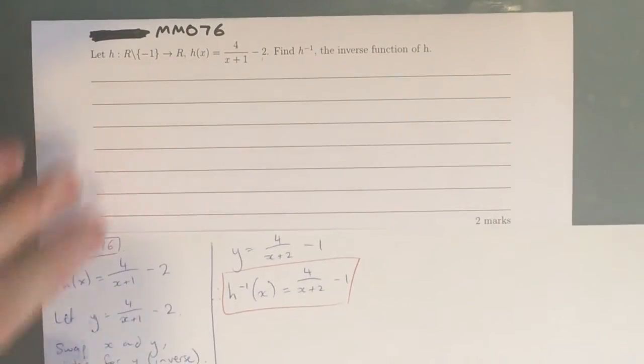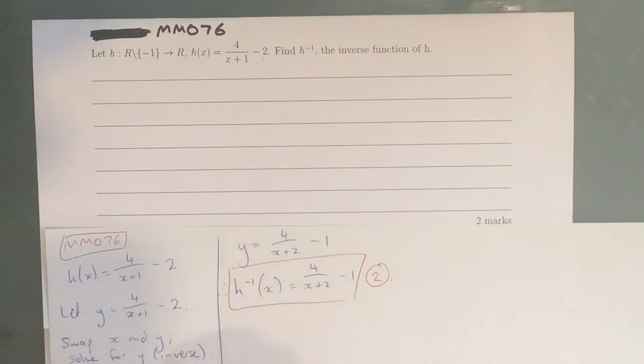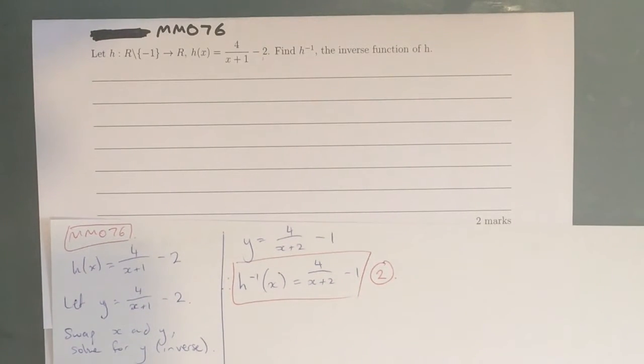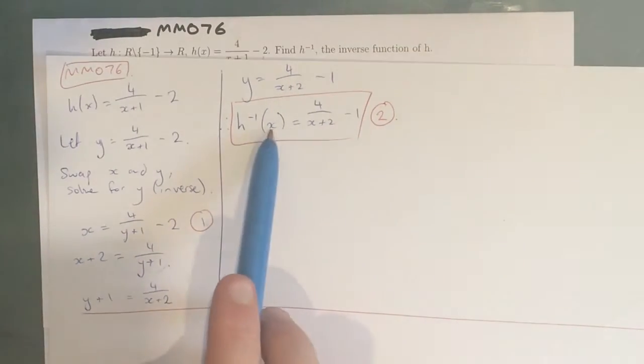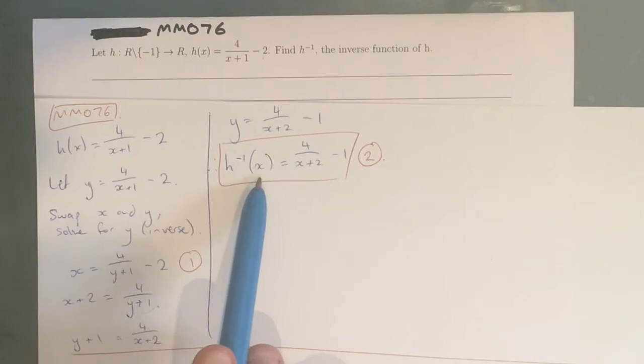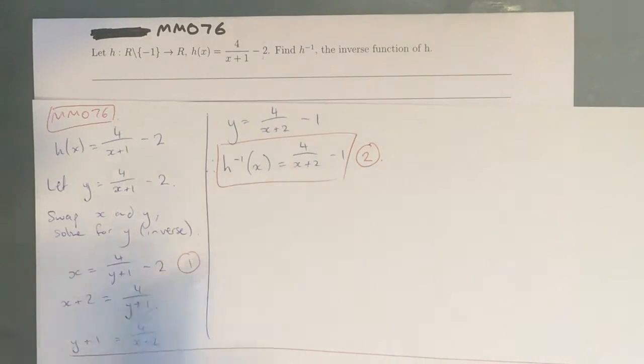So, this is our second mark. And our first mark is here. So, swapping it and realizing how to actually get to the inverse is the first mark. And actually writing the final answer is the second mark. So, inverse of h of x equals 4 over x plus 2, take away 1.